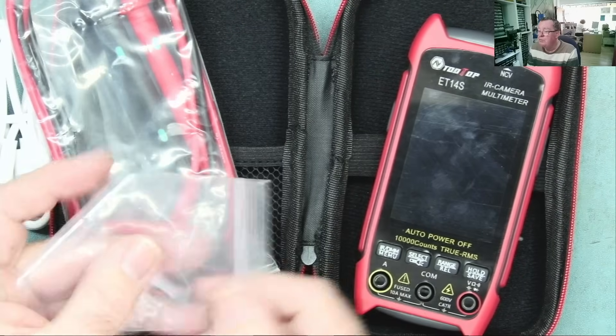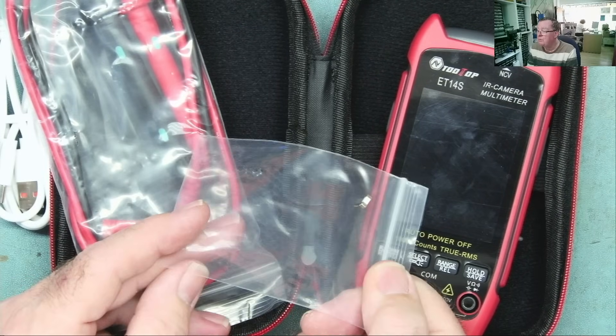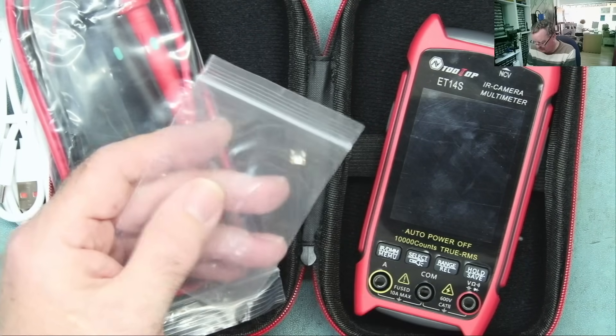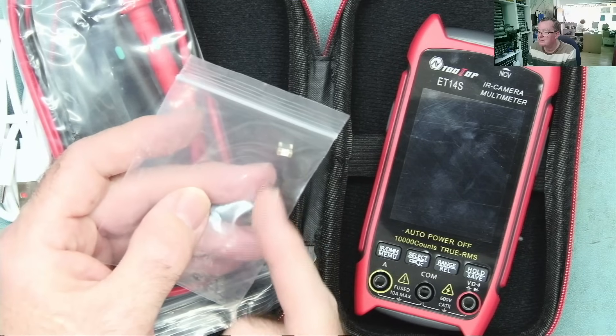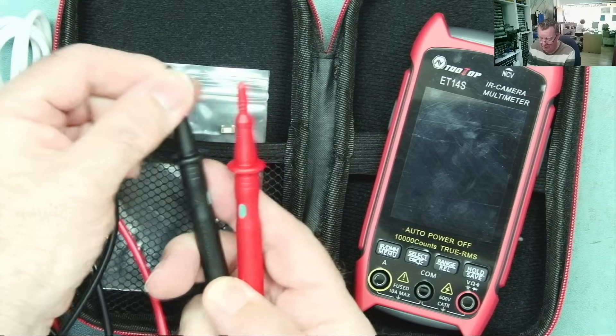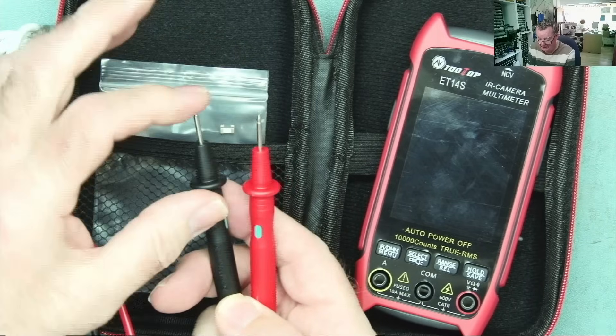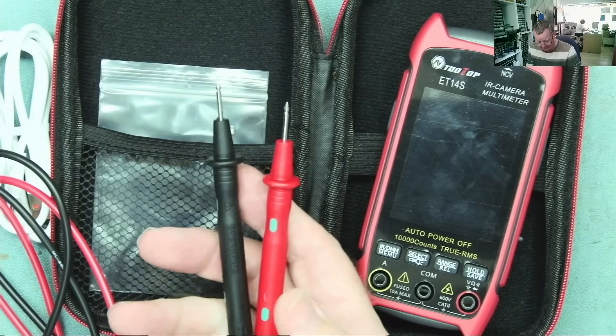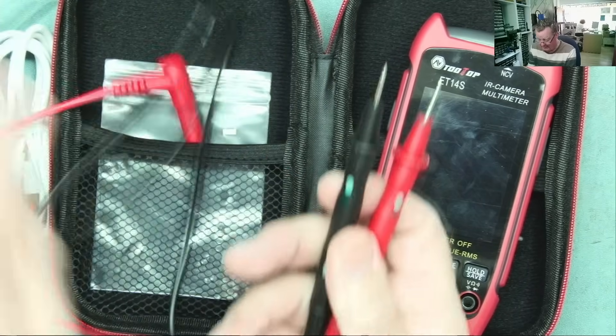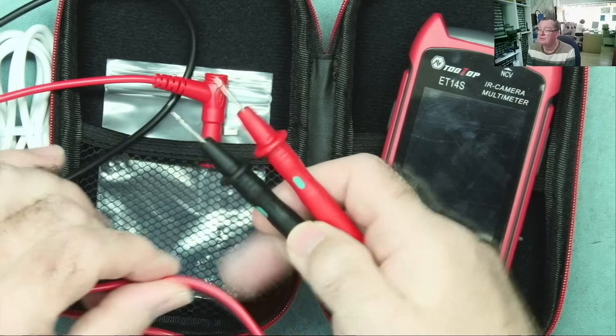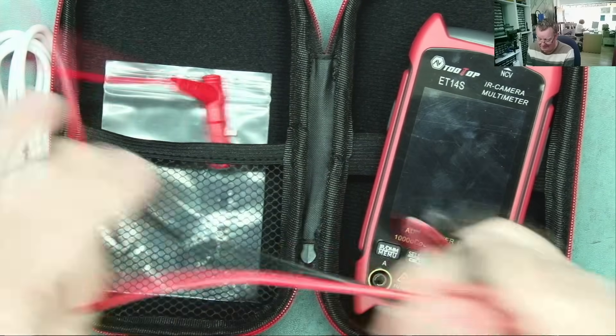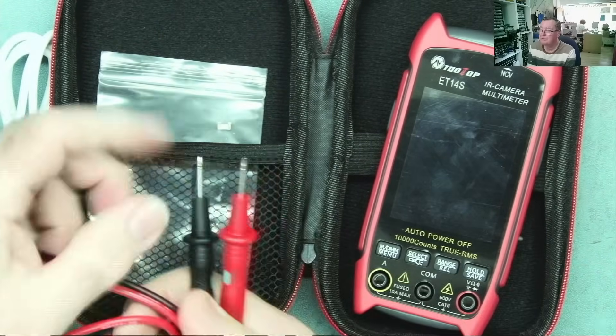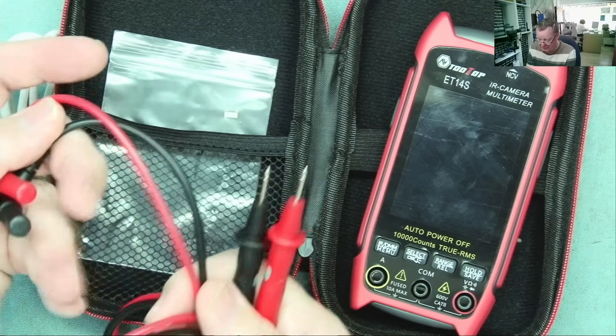Oh, and look, a spare fuse. That's nice. That is nice. Well thought out, that. The meter probes are your standard type, not the piercing type, but standard meter probes. What you would normally get with a multimeter, to be quite honest. I always tend to use my own leads anyway. I have preference for piercing ones, but these are usable.